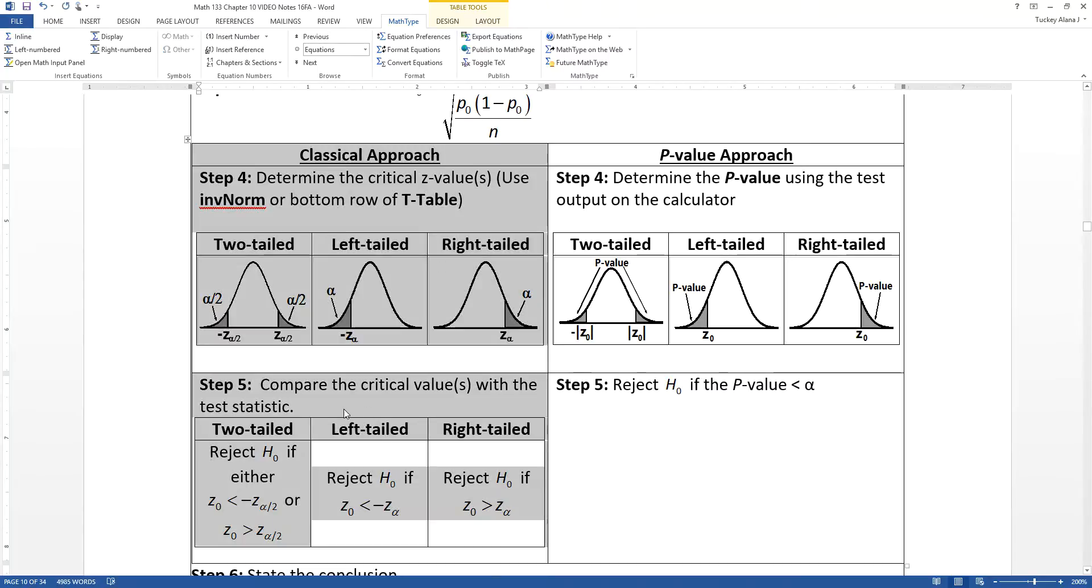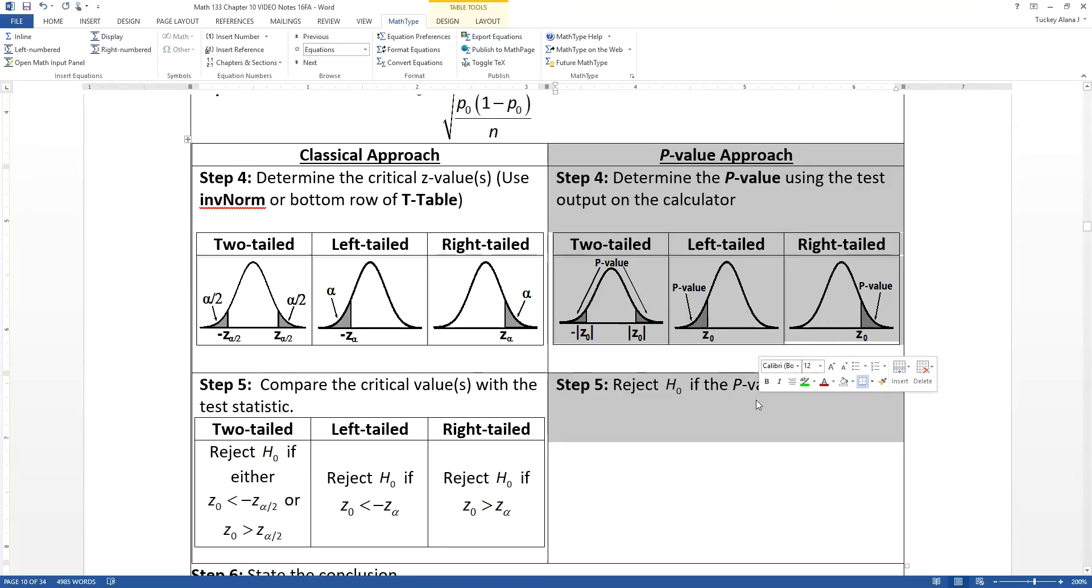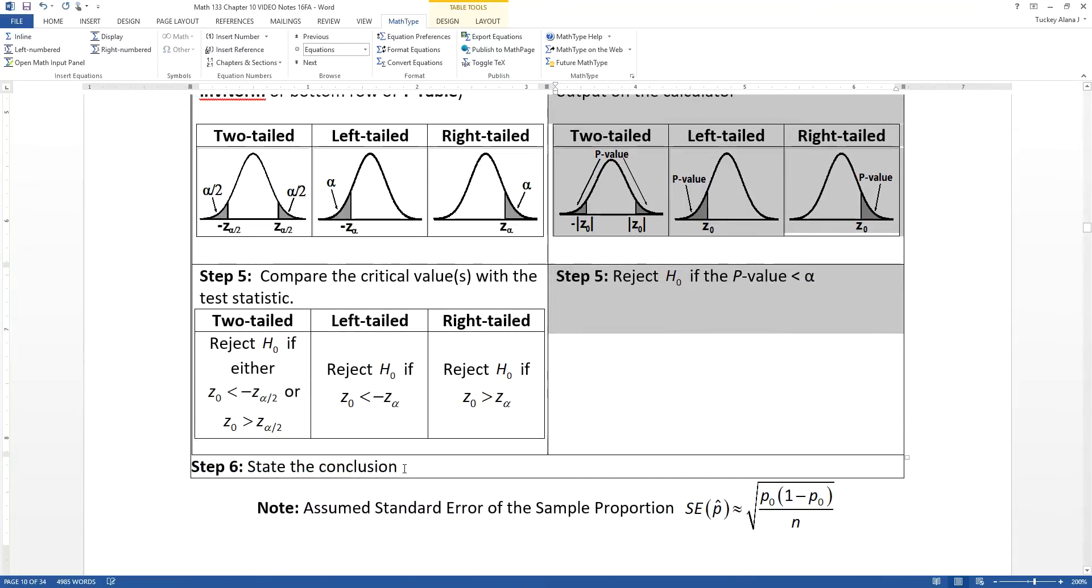That'll lead you through steps four and five. Are you going to find some critical values and then determine whether or not the sample statistic you got in step three is past that? Or are you going to go the p-value approach, the probability approach? And then step six is state the conclusion.